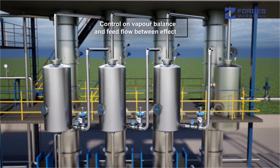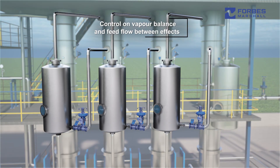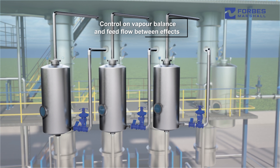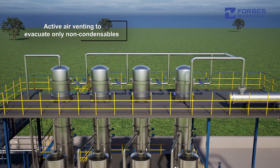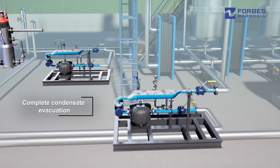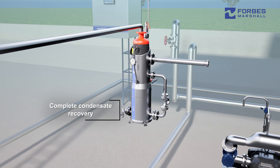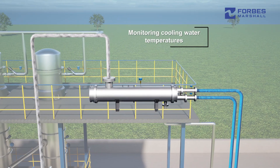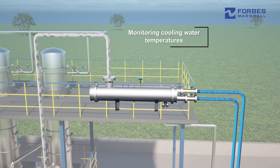Variations in feed temperature are managed by supplementing live steam to the preheater. Vapor balance between effects is controlled through a vapor control valve, while feed transfer between effects is measured and adjusted to maintain a steady state. Active air venting evacuates non-condensibles, and proper steam trapping evacuates condensate, preventing vapor loss and enabling complete condensate recovery.